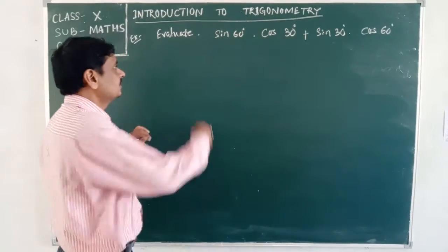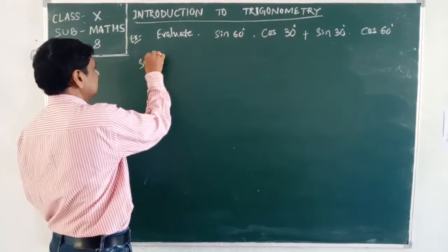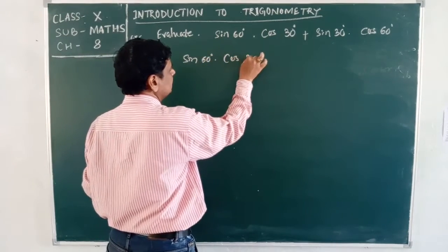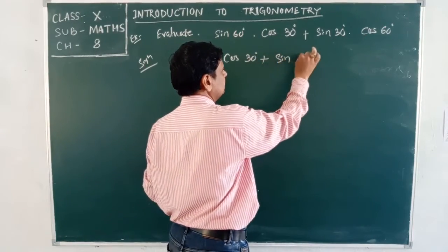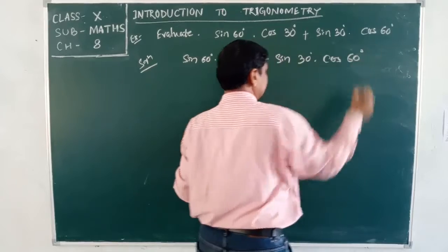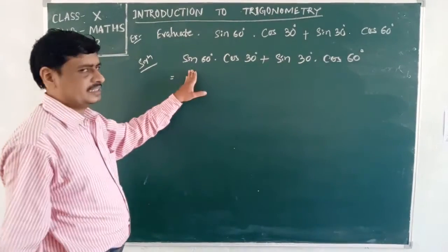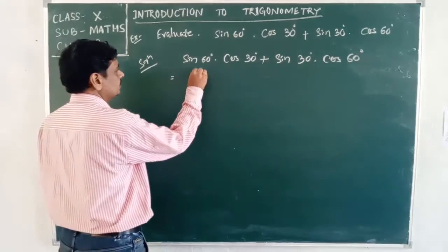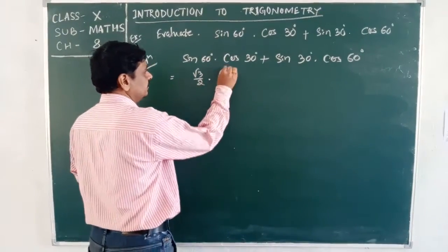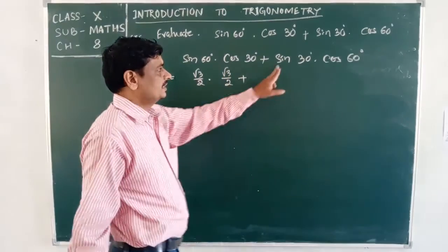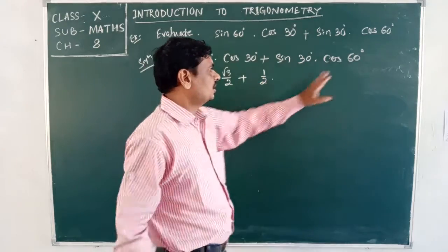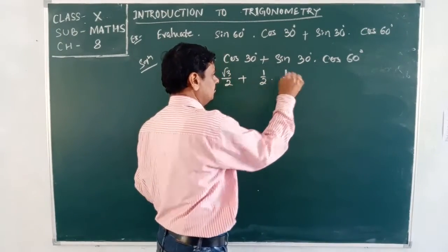We are given sin 60° × cos 30° + sin 30° × cos 60°. Substituting the known values: sin 60° = √3/2, cos 30° = √3/2, sin 30° = 1/2, and cos 60° = 1/2.